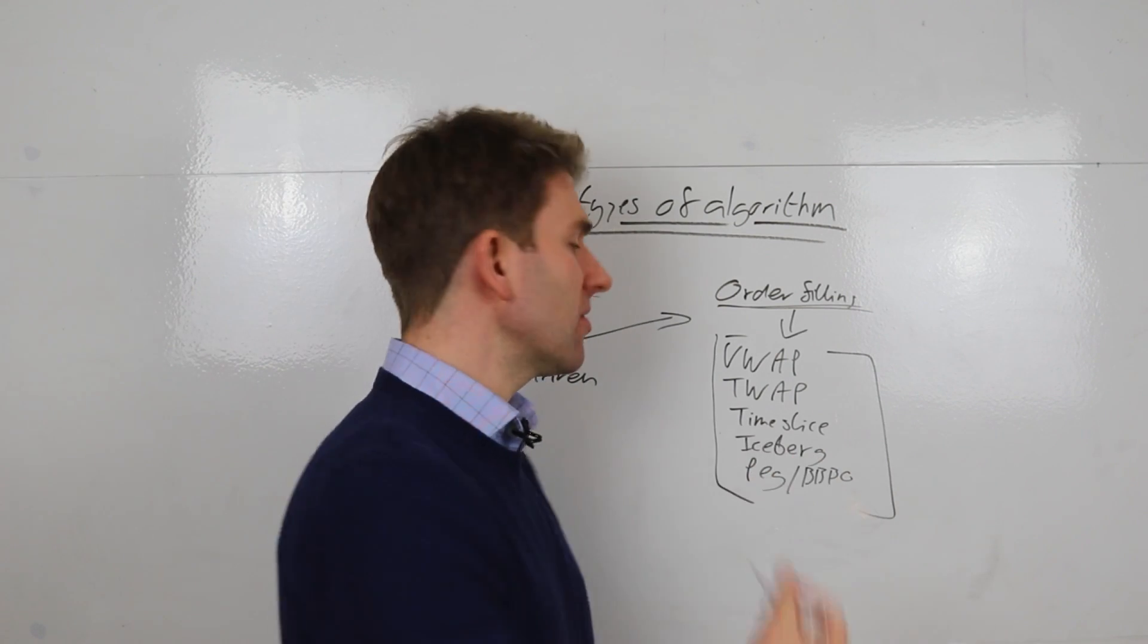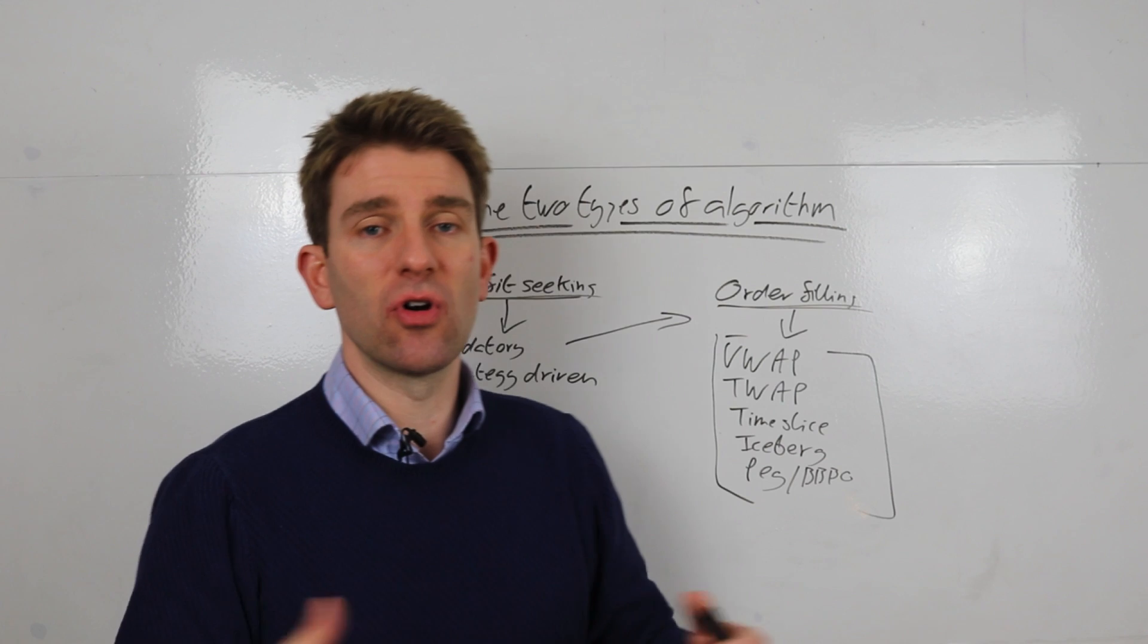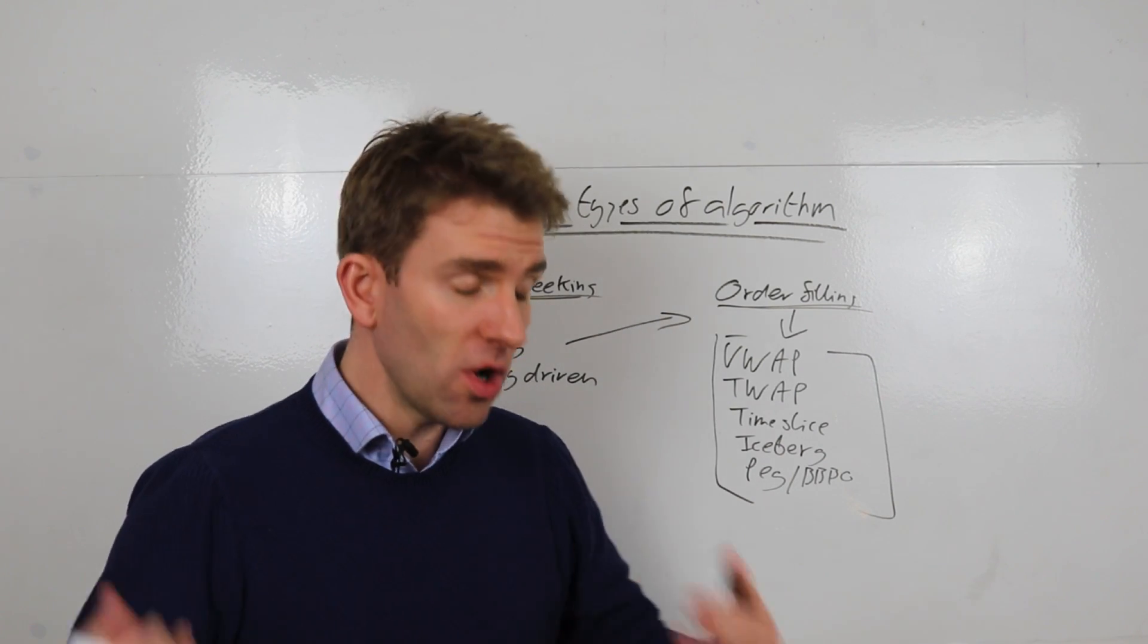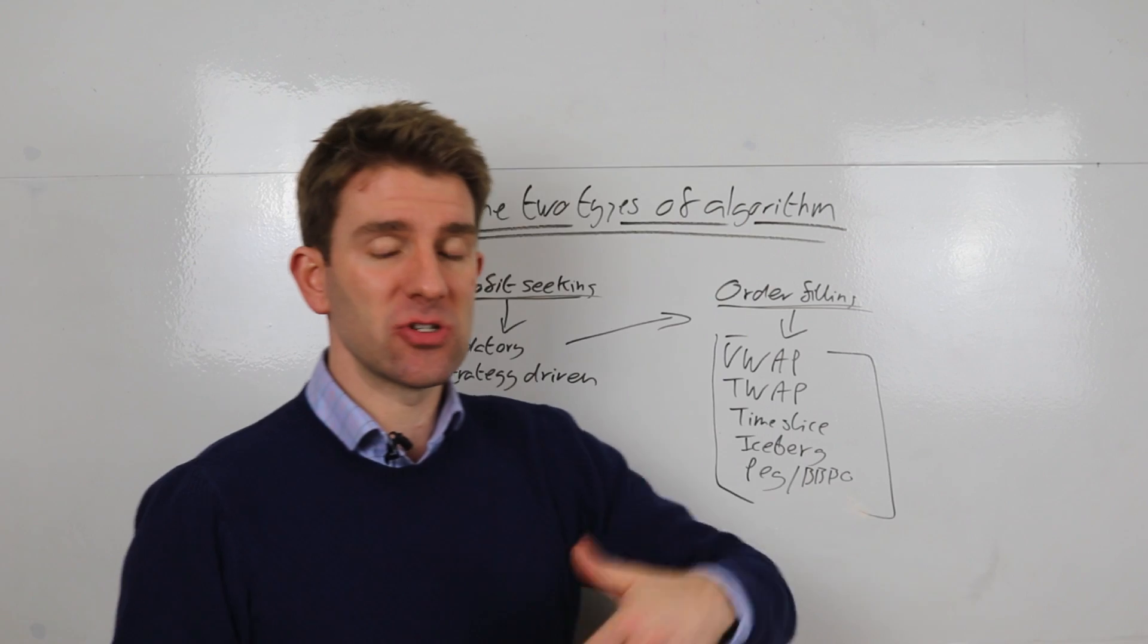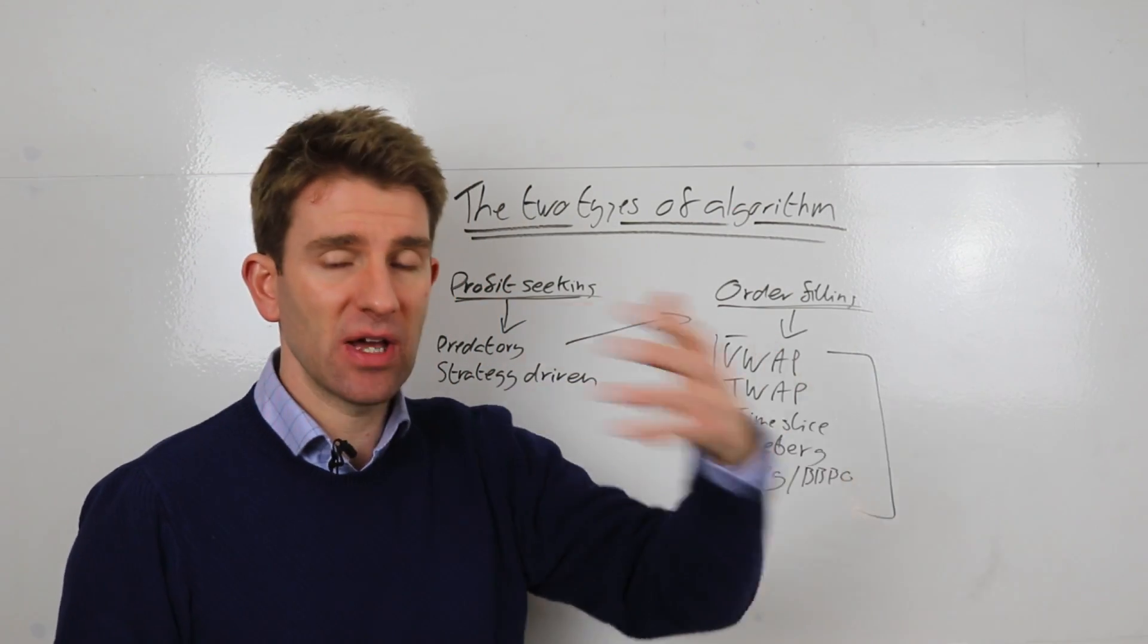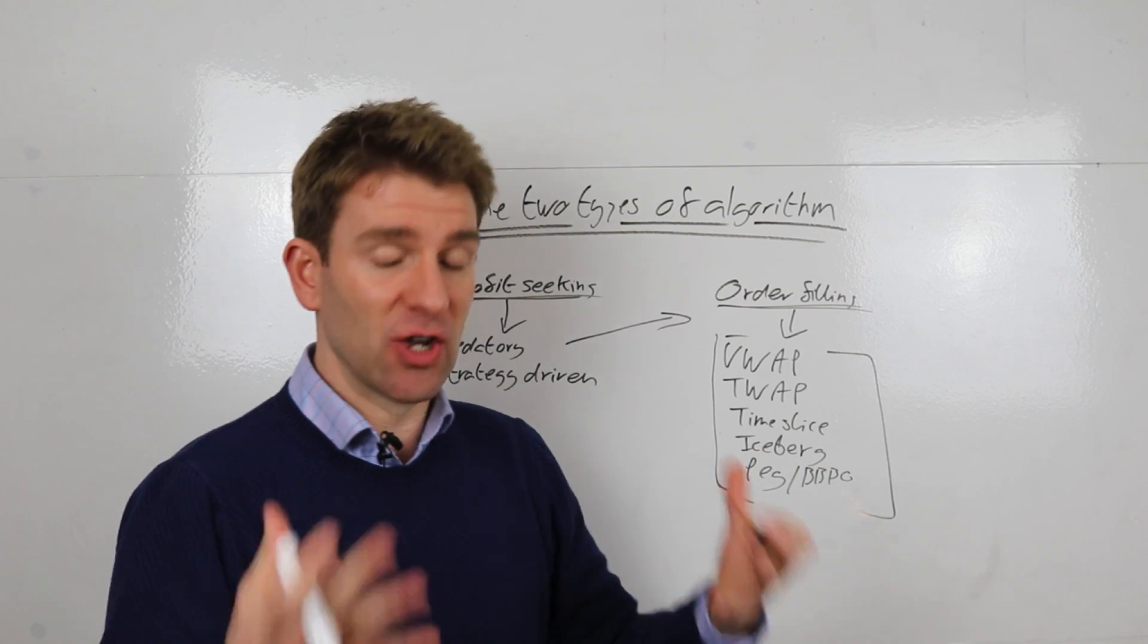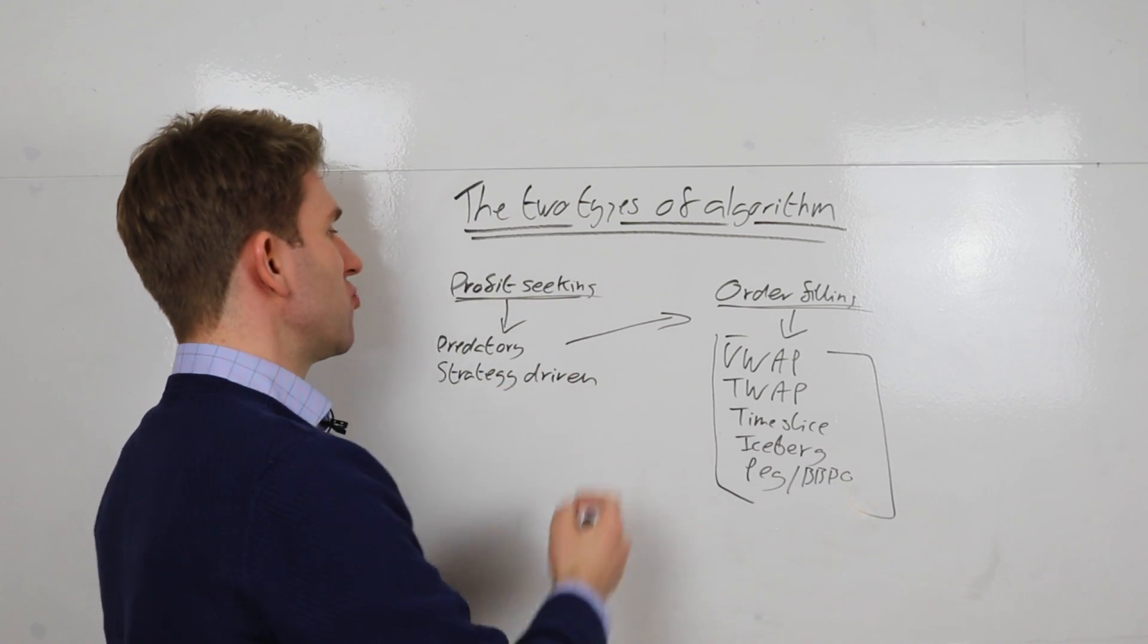But predatory algos want to try to sniff out these larger order-filling algos and then front-run them to make some money. So if it finds an algo that it thinks is executing, let's say, 500,000 shares in a stock that really needs a lot of work to execute, then that predatory algo might bid up that stock knowing that the other order-filling algo is going to try and bid up that stock and capture that liquidity. And so it'll make money off that. But anyway, predatory algo, strategy-driven—those are there to seek profits.